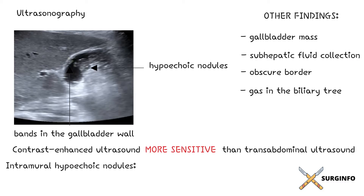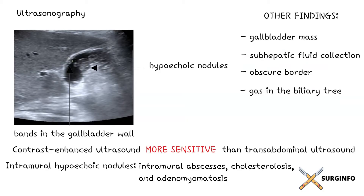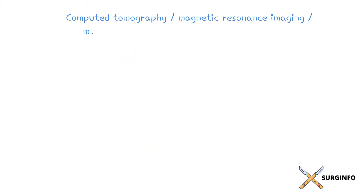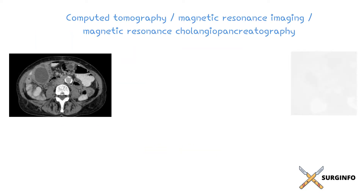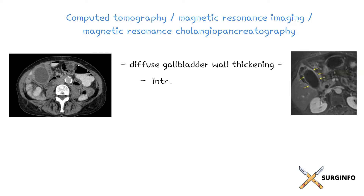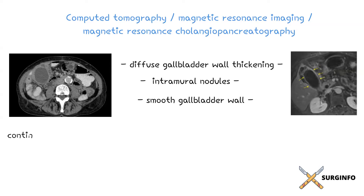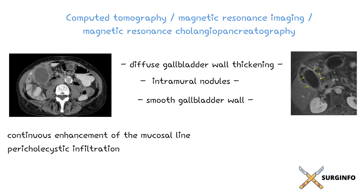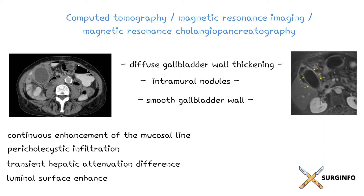Intramural hypoechoic nodules can be seen in other conditions, including intramural abscesses, cholesterolosis, and adenomyomatosis. Features of xanthogranulomatous cholecystitis on CT and MRI include diffuse gallbladder wall thickening, intramural nodules, and a smooth gallbladder wall. After contrast enhancement, features include continuous enhancement of the mucosal line, pericholecystic infiltration, transient hepatic attenuation difference at the gallbladder bed of the liver, and luminal surface enhancement.